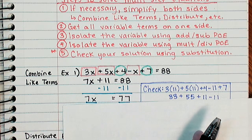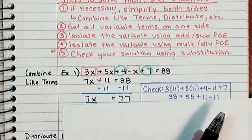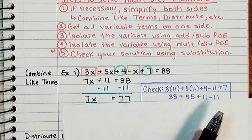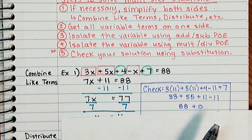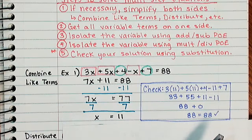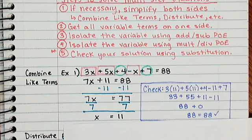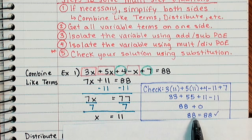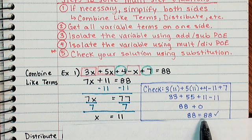I no longer have any addition subtraction going on, so I move on to step number four where I isolate my variable using multiplication and division properties of equality. 7 times x means I have to divide by 7 on both sides giving me x equals 11. In purple, I checked my work by substituting 11 for x in the original equation and when I simplified fully, I found that my answer was correct because I made a true statement. 88 does indeed equal 88.